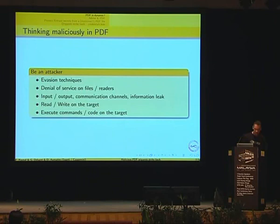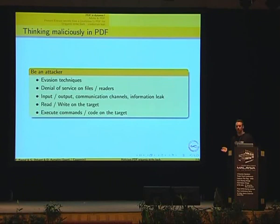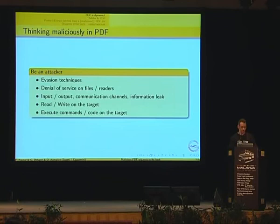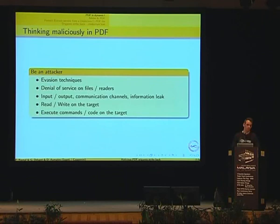Looking at the PDF language from a malicious perspective, we focused on five directions: evasion tricks — I'm an attacker, I don't want to go to jail, so I have to be invisible. For instance, we built a PDF that can be opened either as a JPEG image or as a PDF file depending on the software, to bypass antivirus. You can do denial of service. You need input/output communication with your payload. You'd also like to read and write on the remote target and execute commands. We found ways to do most of these, except writing to the target.